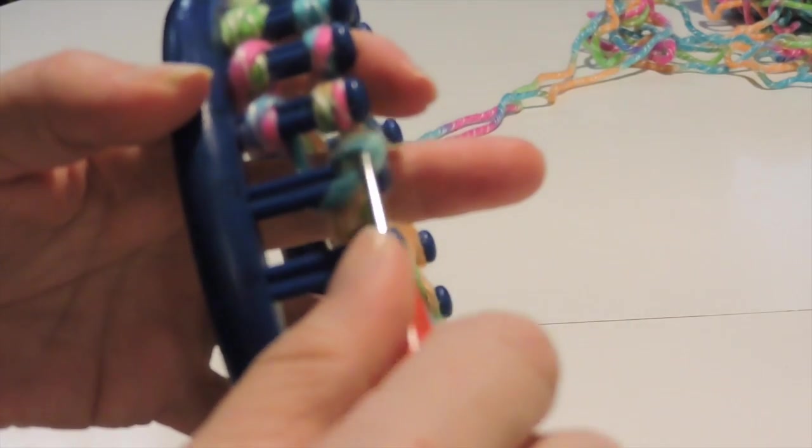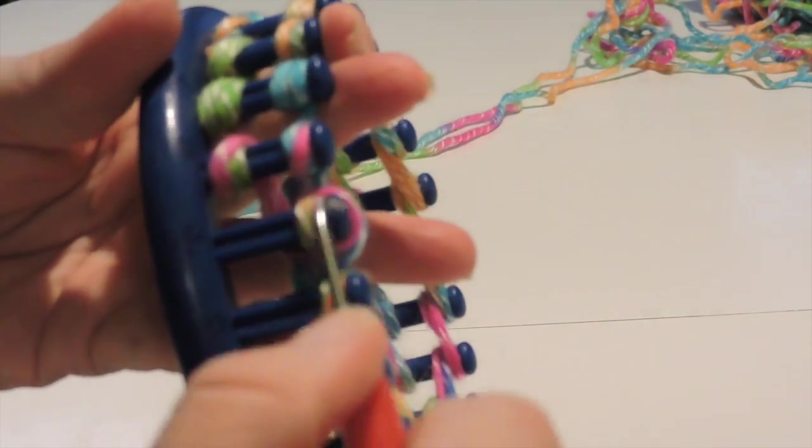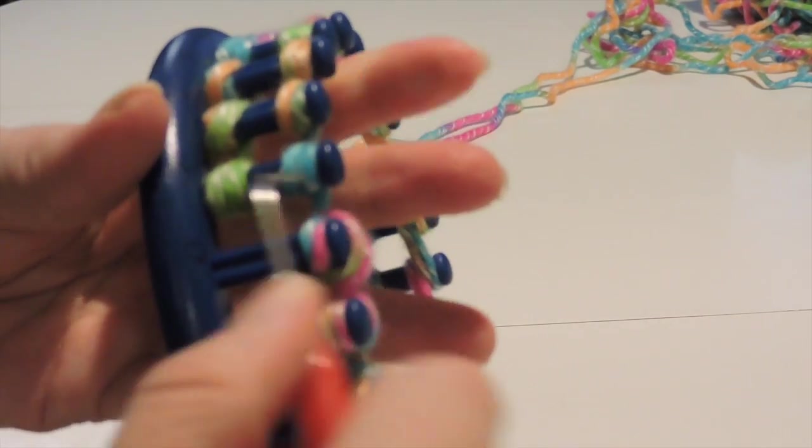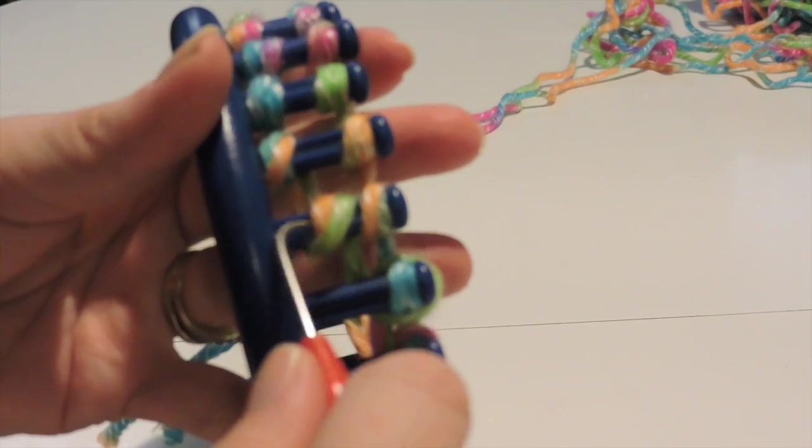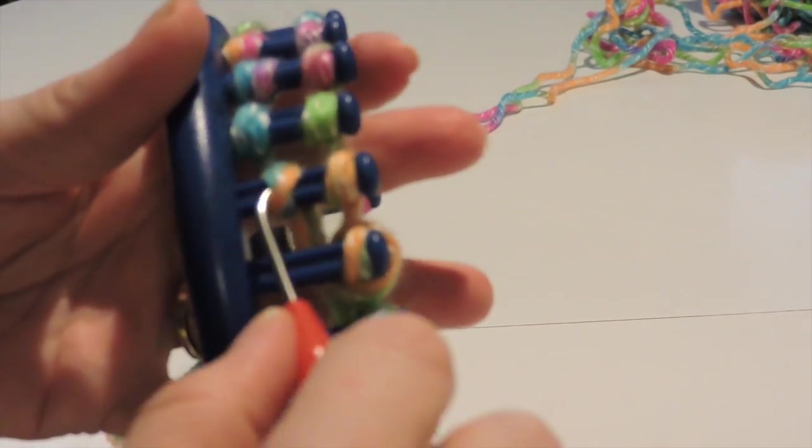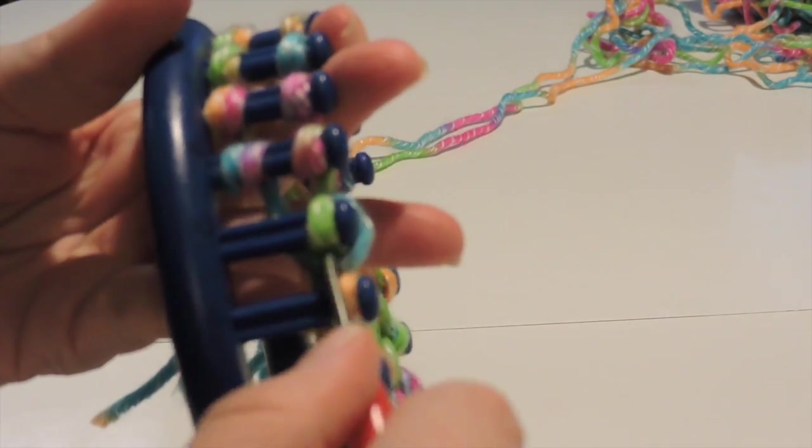Again, it's the bottom over the top. And this will complete our E-wrap cast-on method once we meet back at the anchor peg. Then we will officially be casted onto our loom, and we can proceed to the next step.